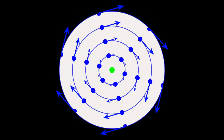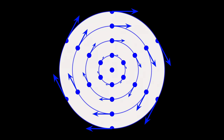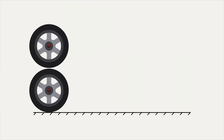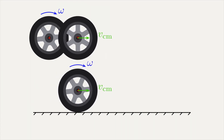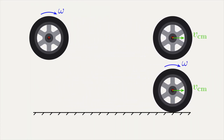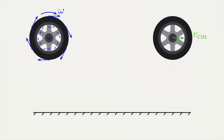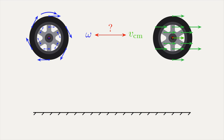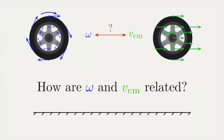Our ultimate goal is to understand the motion of points on a rolling wheel. Our approach will be to use the velocity diagram we just created for a rotating wheel to help us construct an analogous velocity diagram for a rolling wheel. Note that a rolling wheel can be thought of as a wheel rotating about its center that simultaneously translates in a straight line with a constant speed. Since we already know the velocities for points on a rotating wheel, all we need is the velocities for points on a translating wheel — and every point on a translating wheel has exactly the same velocity. The big question is: how are the translational and rotational speeds related for a wheel that rolls without slipping?